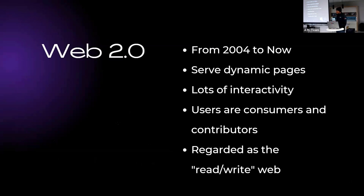Now we move on to Web 2.0, which started around 2004 until now. Web pages on the internet were becoming more dynamic and users were able to interact with them by creating content or leaving comments on the pages. Users were now not only consumers, but contributors to the internet. The internet was not only used to get information, but web pages could also get information from users. This phase of the internet is commonly referred to as the read and write web.